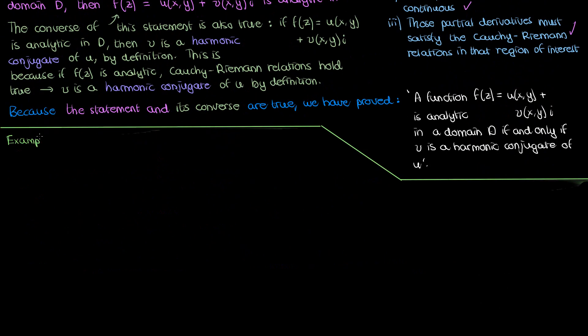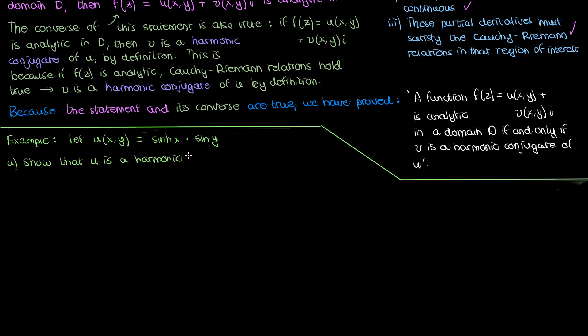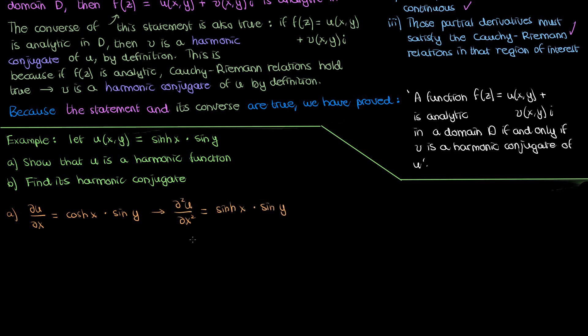Now before we end this video, let's do a quick example. Suppose I have a function u given by the hyperbolic sine of x times the regular sine of y. The first part is to show that u is a harmonic function, and the second is to find its harmonic conjugate. For part a, we take the second partial with respect to x and the second partial with respect to y. Taking the first partial of u with respect to x gives cosine x times sine y — the sine y is treated as a constant, so we just take the derivative of sinh, which is cosh. Taking the second partial in x gives hyperbolic sine again.